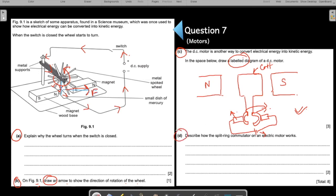Now the last part. Describe how the split ring commutator on the electric motor works. If you see, this is also a repeated question. We have answered this question while we were practicing one of the questions before this video. So how does it work? Practice talking about such questions which are common and which repeat again and again in IGCSE.